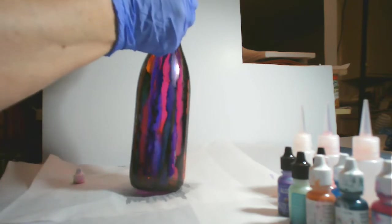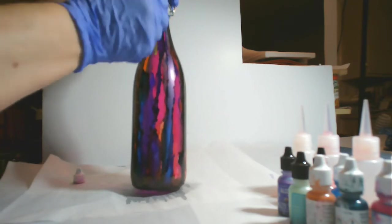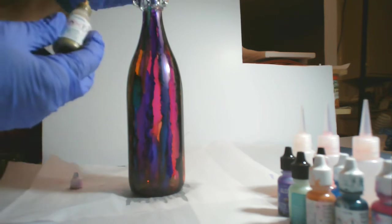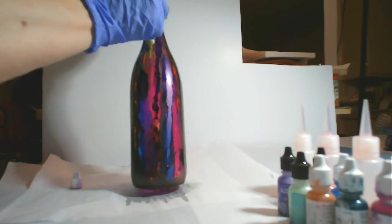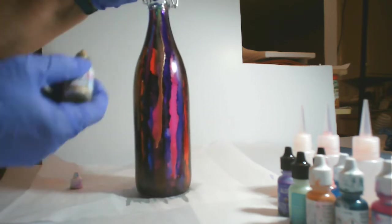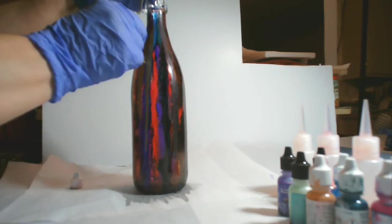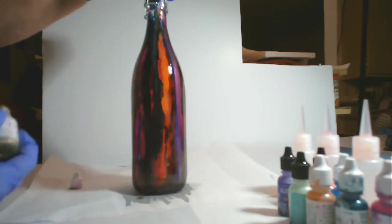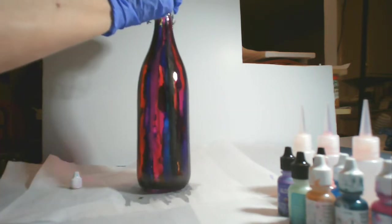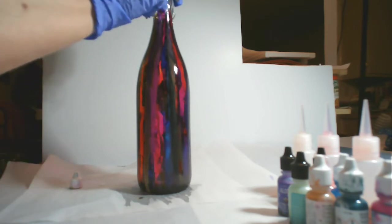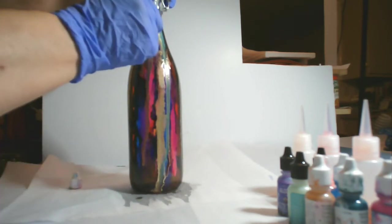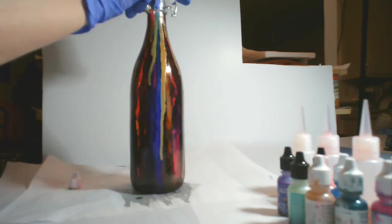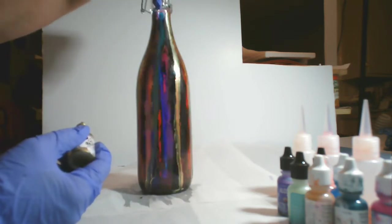And then I'm going to come back with the gold. When you use gold alcohol ink, be sure to shake it really good because it separates when it's been sitting for a while. I'm just going to let drips of this run down over the top of the other colors. As it dries, it blends in with the color beneath it. It still has that sparkly gold hue to it, but you can also see the color beneath it mingle with the gold.